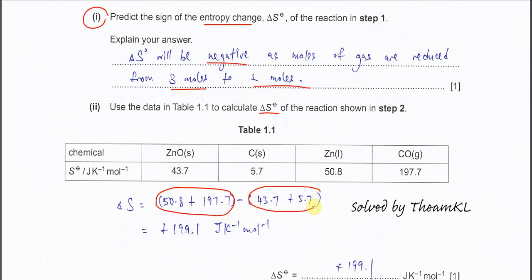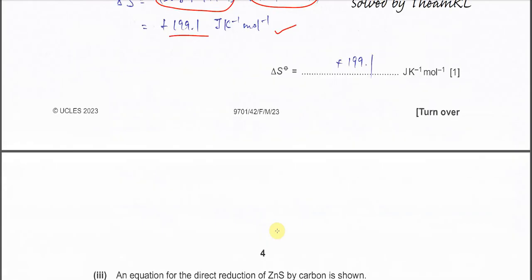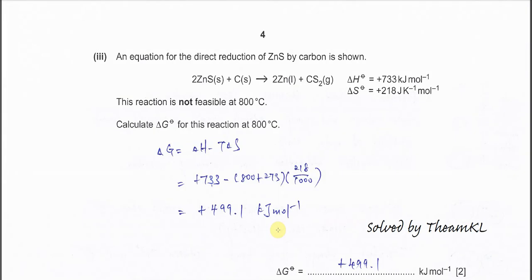Part three: we have another reaction between zinc sulfide and carbon forming zinc and CS₂. Enthalpy is already given, entropy is already given. This reaction is not feasible at 800°C. Calculate the ΔG to prove that it's not feasible. First, you need to know the Gibbs equation: ΔG = ΔH - TΔS.